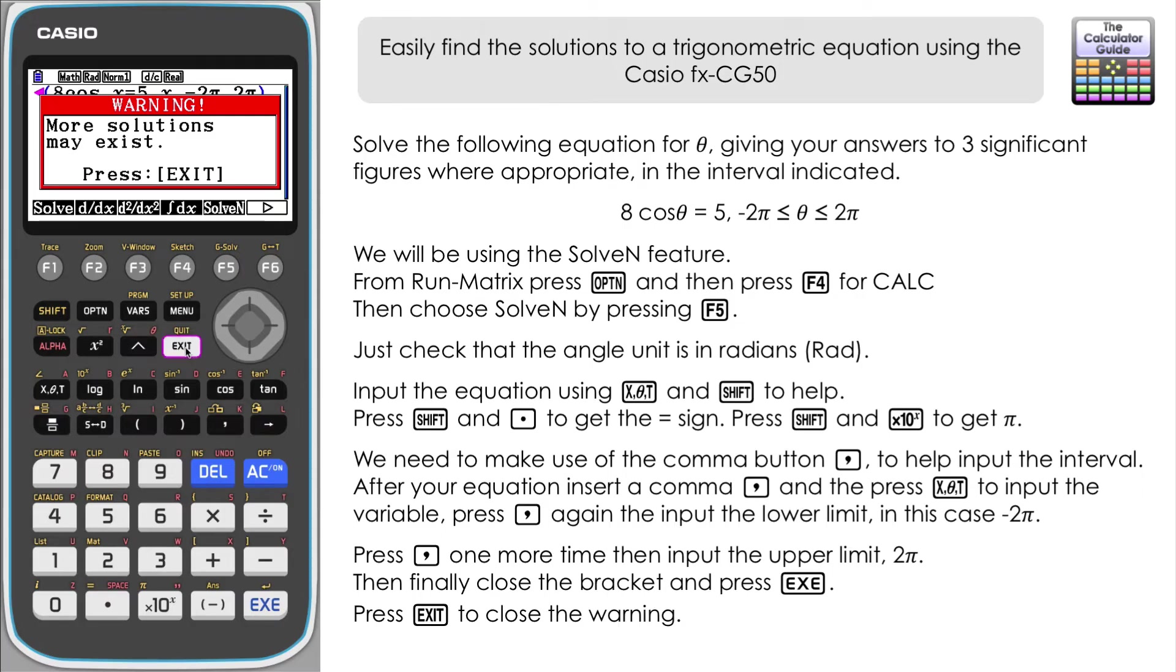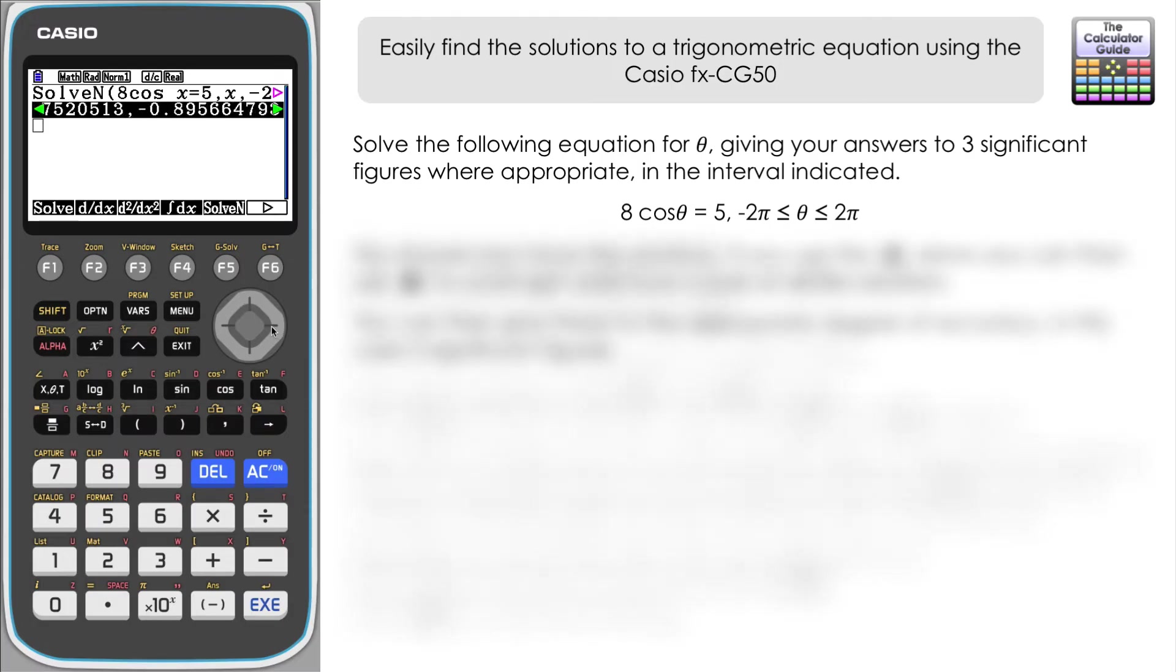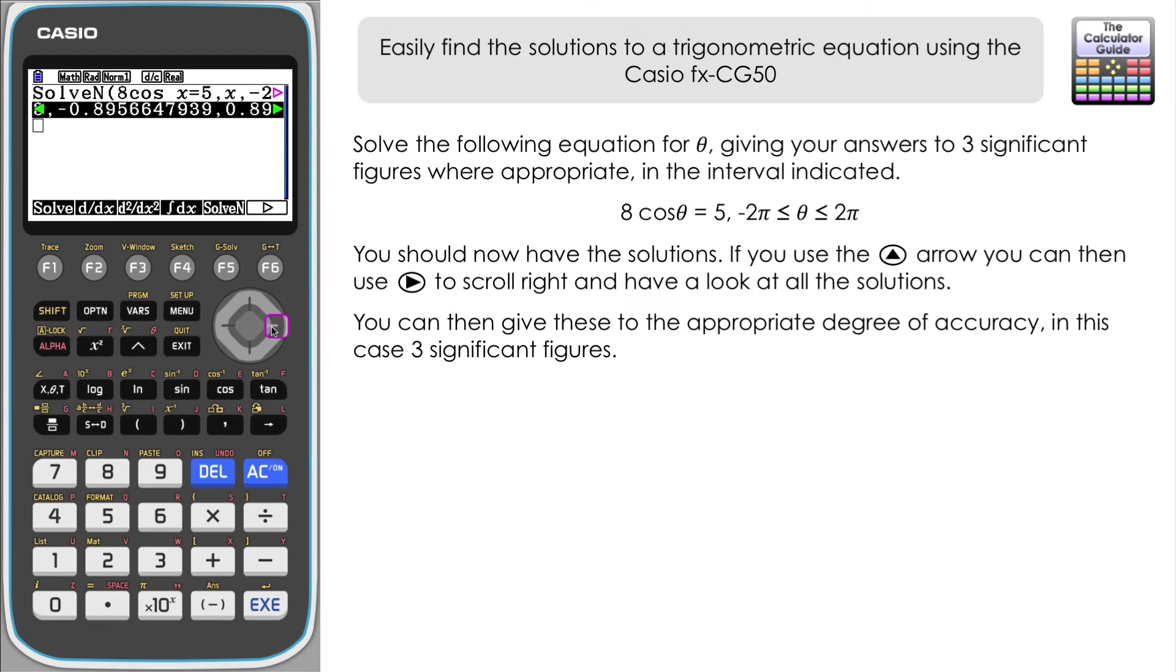We'll just press Exit and then we should find here in the brackets above, if we just navigate up, we should have our solutions. Now there are four solutions to this particular equation. We can see that we've got them written here in decimal form. Remember we need to have it to three significant figures, so we can write these four solutions down to three significant figures and we've answered that particular question.